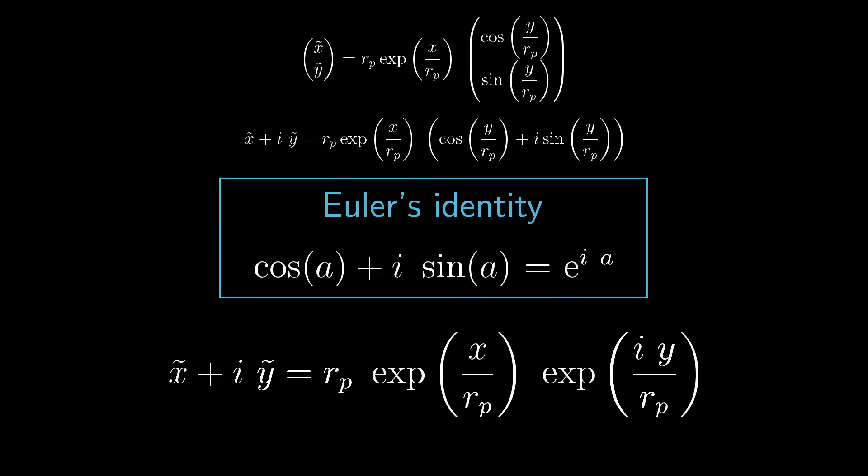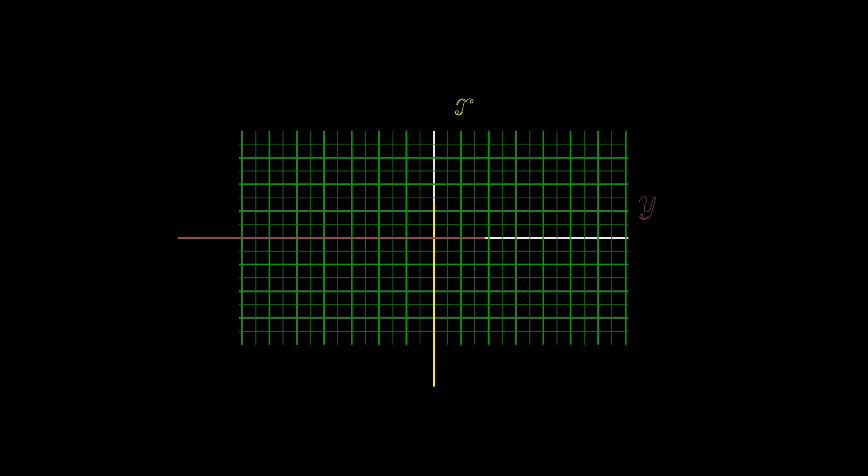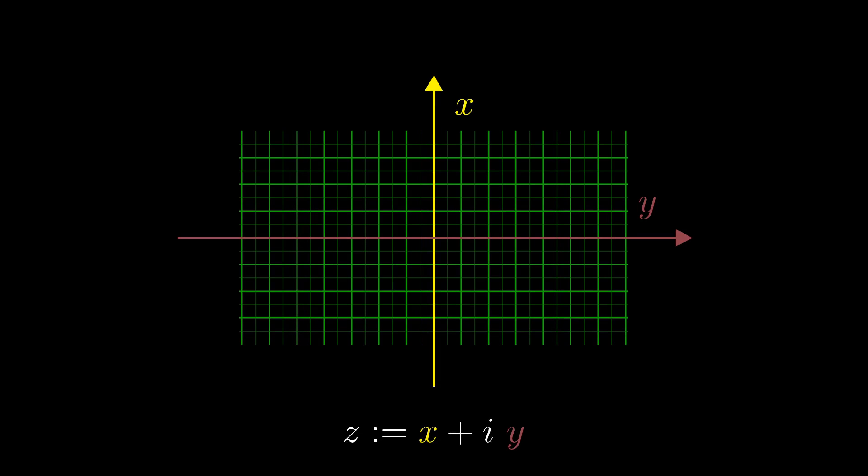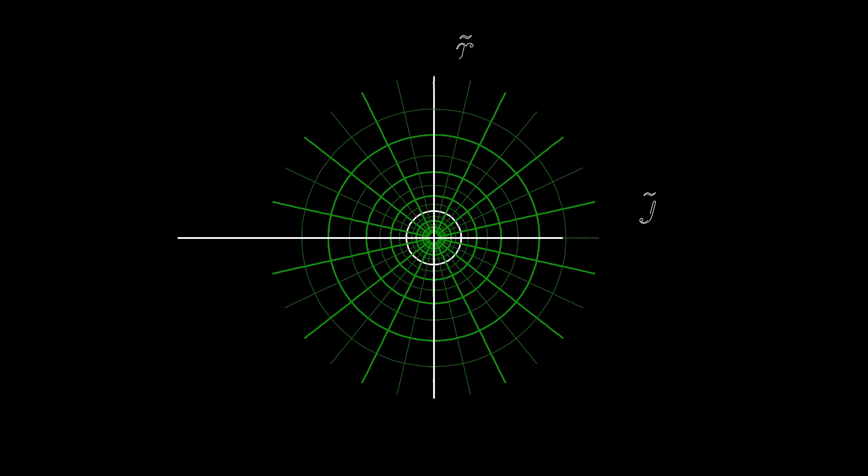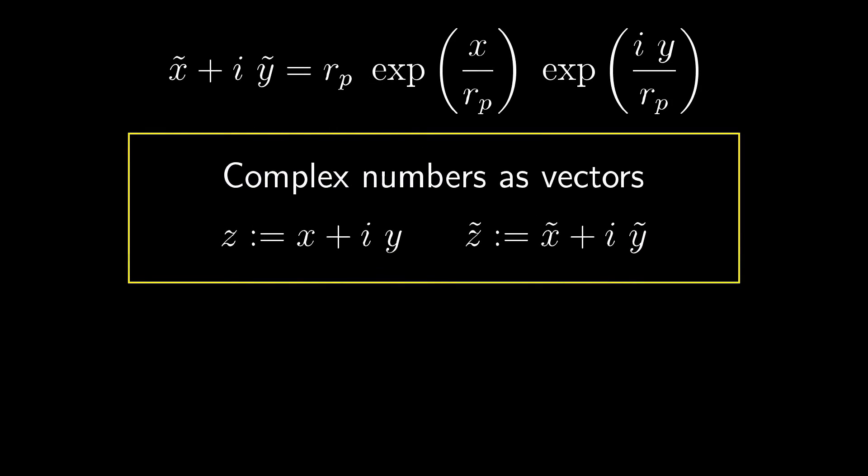Now the equations look a lot more manageable. But we can do even better. Let's use complex numbers instead of two separate coordinates. Let's call this complex position before the transformation zeta. And call the position after the transformation, tilde zeta. This way we get this extremely simple and beautiful solution for the transformation.